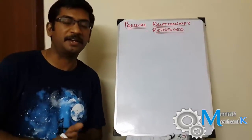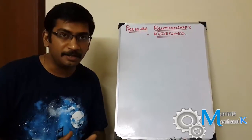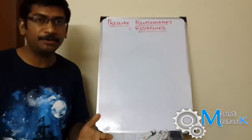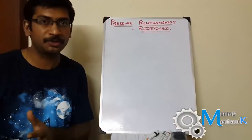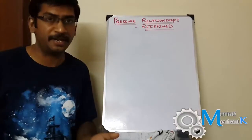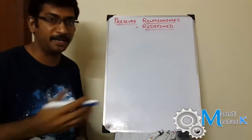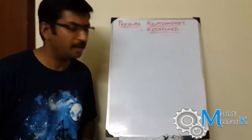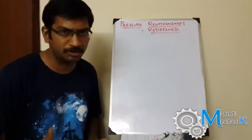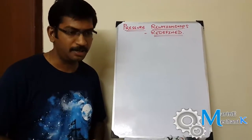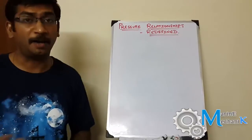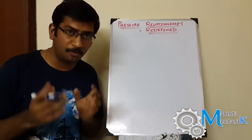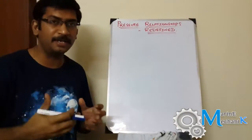Welcome to Marine Mechanic Videos. The topic for today is pressure relationships. We all know that pressure is force acting upon a unit area, simply expressed as force divided by area. On ships and in science, we deal with lots of pressure values like gauge pressure, atmospheric pressure, absolute pressure, absolute zero pressure, and barometric pressure.